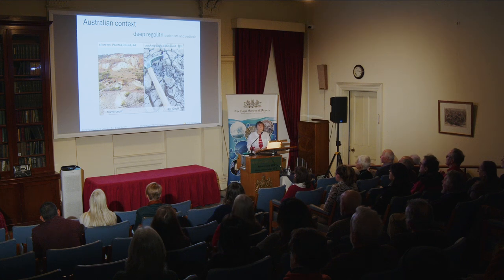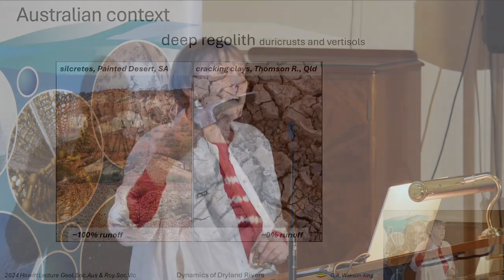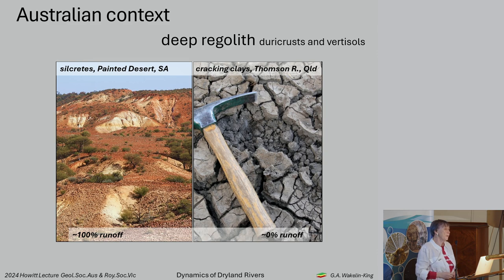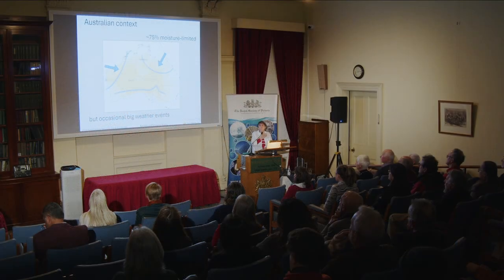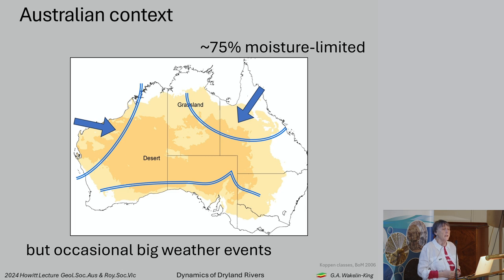We have deep regolith — everything that isn't fresh air or fresh rock. Some regolith has very high runoff coefficients. Rain falling on Silcrete, Gibber Plain, or pale weathering profiles is just shed off like anything. Whereas cracking clay soils from the Thompson River act like a ginormous sponge and have to be really, really wet before shedding any rain. Because of our position on the globe and our topography, we are a largely moisture-limited continent, but when a big weather event happens it can sweep far enough inland to produce big dumps of rain and big flows into the inland.